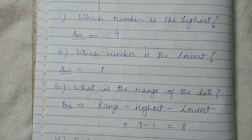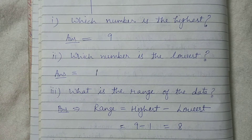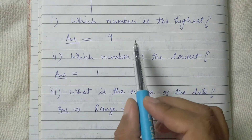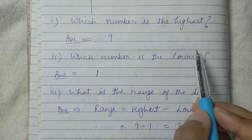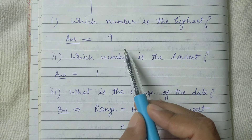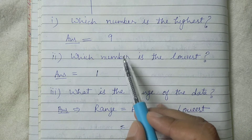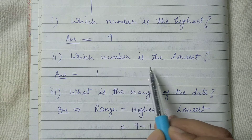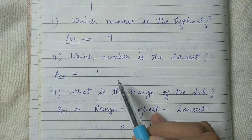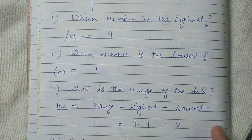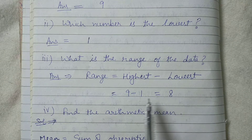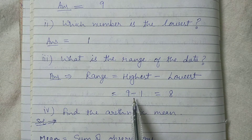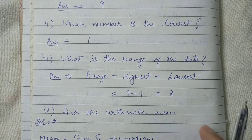Then we will answer the following questions. First question: which number is the highest? Out of marks one to nine, obviously nine is the highest. Second question: which number is the lowest? Obviously number one is the lowest. Third question: what is the range of the data? The formula of range is highest minus lowest. Nine minus one equals eight. So eight is the range.